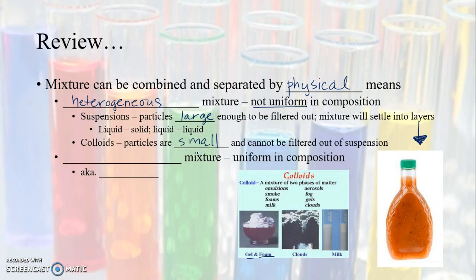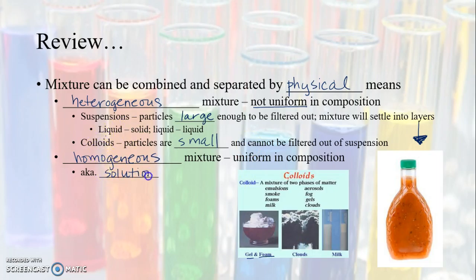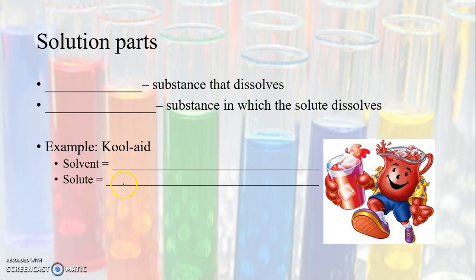If you tried to run a colloid through a filter, the particles are so small they would go right through. And then you have a homogeneous mixture, which is going to be one that is uniform in composition — the same all the way throughout. We call those solutions.